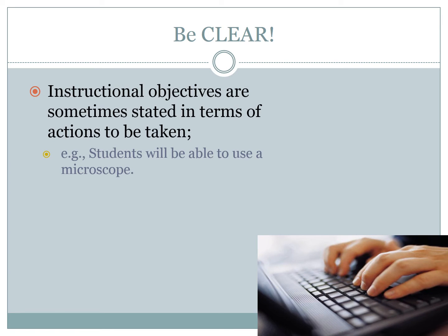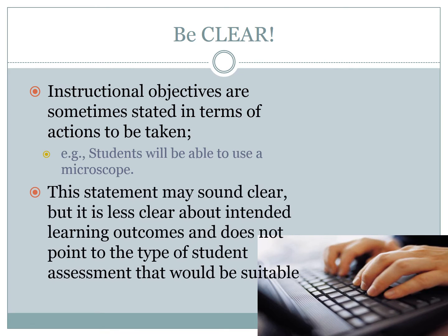Now let's see what an instructional objective for that goal might look like. Maybe as part of that investigation you want your students to be able to use microscopes. It might be tempting to write an objective such as 'students will be able to use a microscope.' This is a very common mistake teachers make when writing objectives — it's very general. We don't know exactly what that means, and we don't know how to assess it. If a student is struggling with using a microscope, that statement doesn't tell you a lot about why they're struggling. Is it because they don't know how to mount the slide? Is it because they don't know how to adjust the focus? The more specific your objectives are, the better.